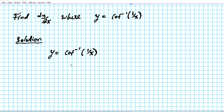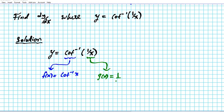To apply the chain rule, we're going to decompose the function. The outer function is f of x, which is the arc cotangent of x, and the inner function is g of x, which is the rational function 1 over x. To apply the chain rule, we differentiate both the outer and the inner function. The derivative of the outer function, using the differentiation rule we talked about, is negative 1 over 1 plus x squared.